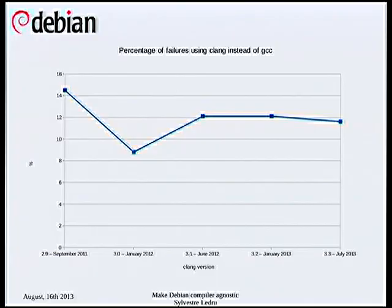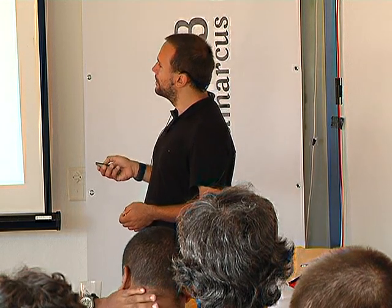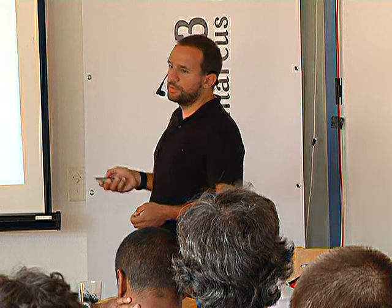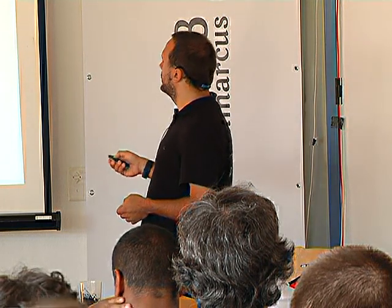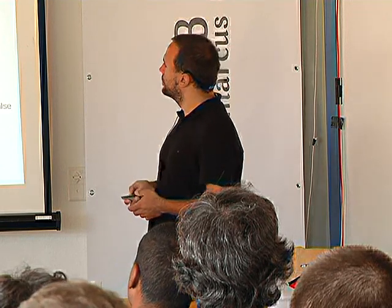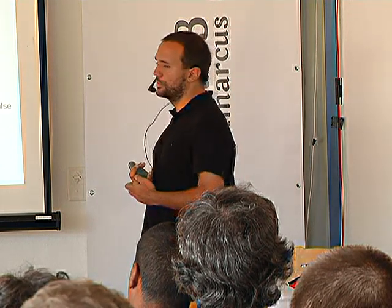Here are the results we've got. We already did five rebuilds, basically one for each major version of Clang. As you can see, the first version was a bit more than 14% failure, basically because the compiler was not fully supporting the C and C++ standard. Then we have a decrease as features were completed, and then it increases again because we are adding more checks into the compiler.